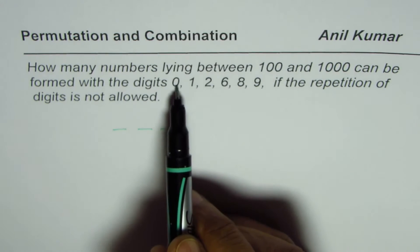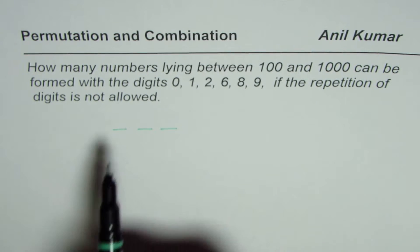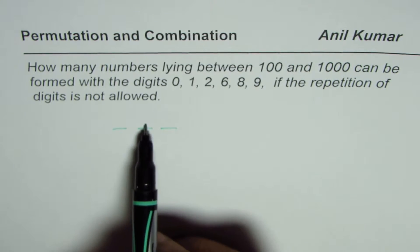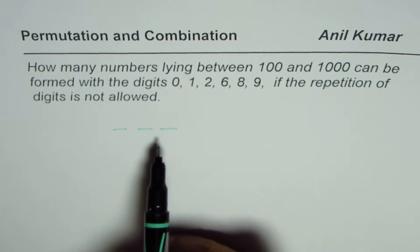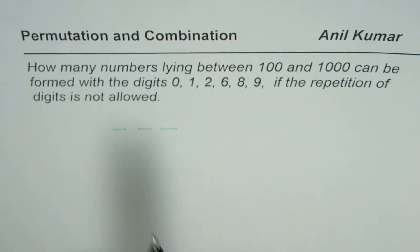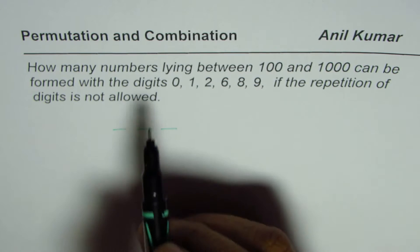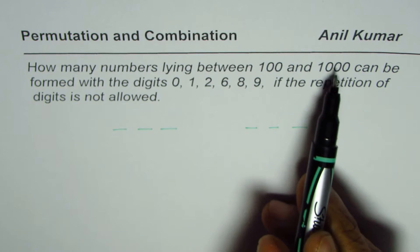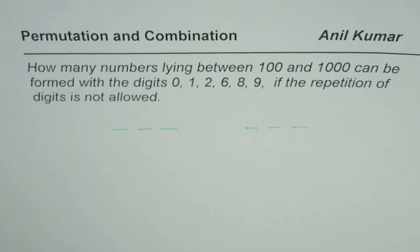Now, we are given six digits and we need to find the combinations for filling up these three places with the six digits. And you also notice that if we start a number with 0, then it will not be a three-digit number and therefore it will not be counted within 100 to 1000.